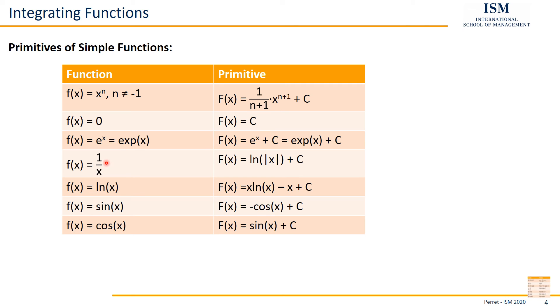If we have a function one divided by x, that's actually another special case here. This works for all n, except for minus one. Because for minus one, we have one divided by x. And the primitive of this is ln of x. Because we know when we take the first derivative of ln of x, we get one divided by x.